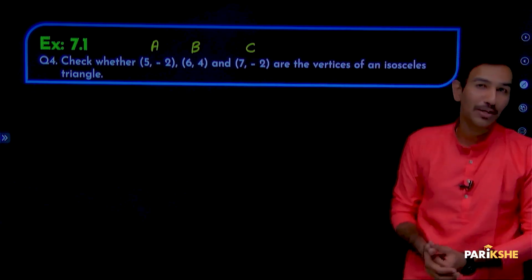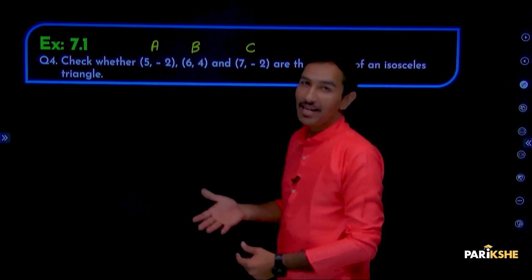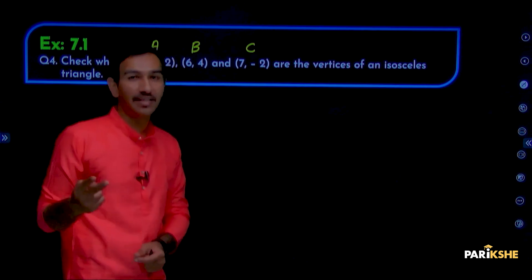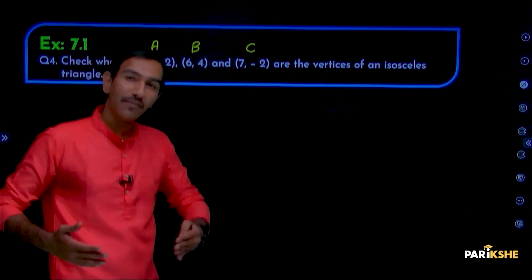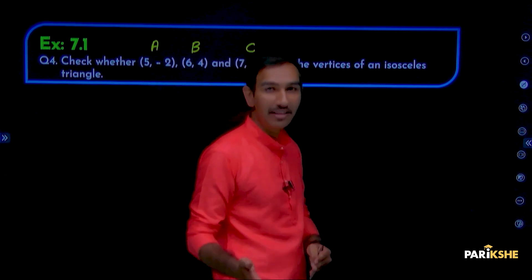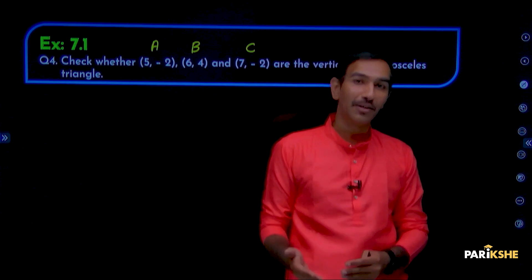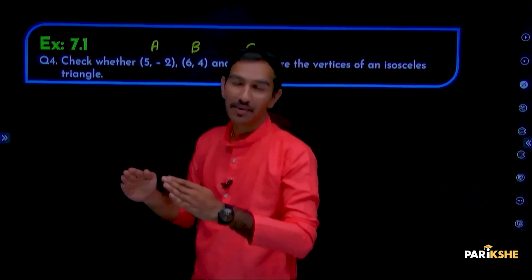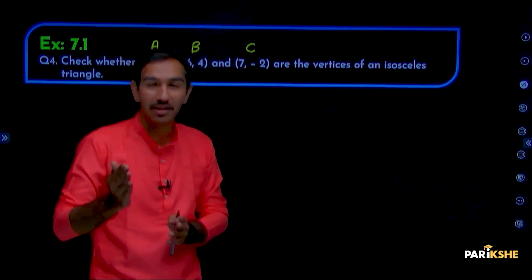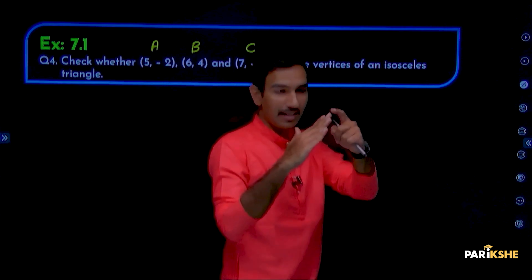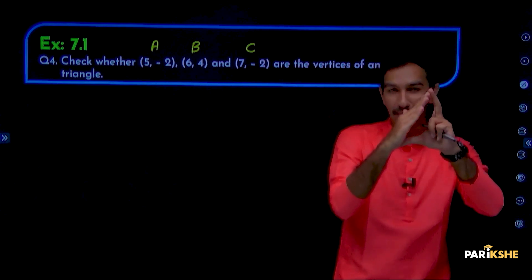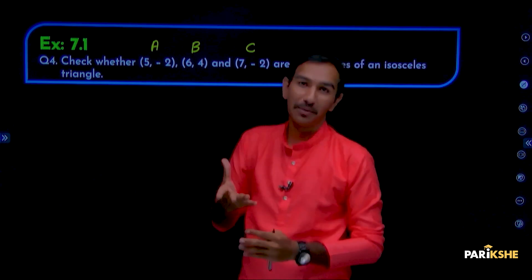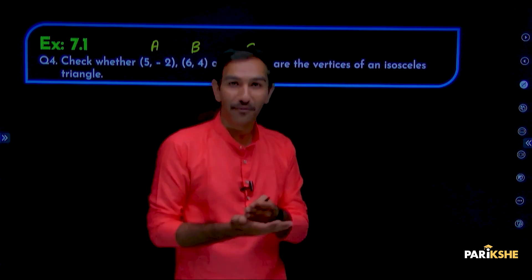How do we check this? An isosceles triangle is a triangle where two sides are equal to each other. So, if one side's measurement is equal to another side's measurement, then it is isosceles. Measurement means distance. The distance between two points — if those distances are the same, then we use the distance formula.